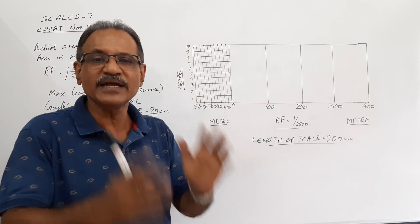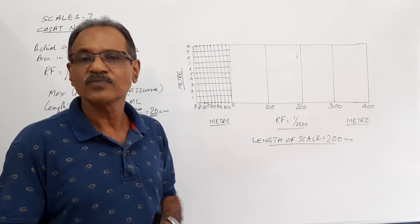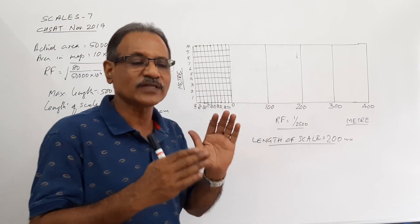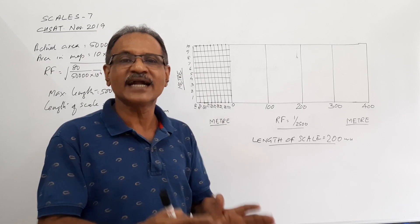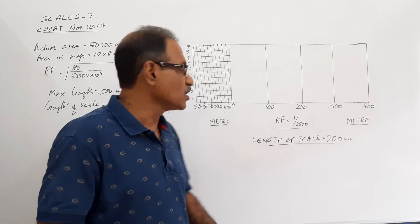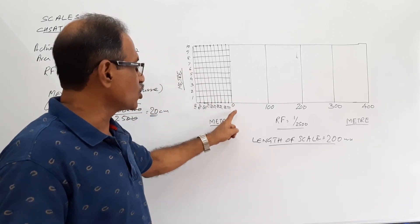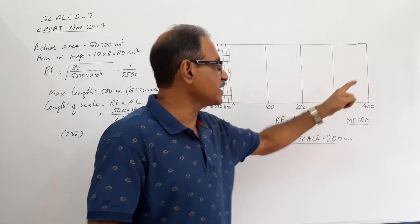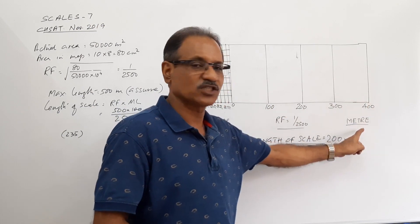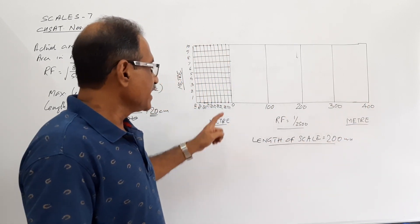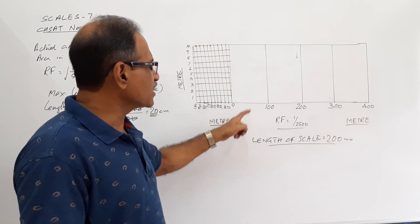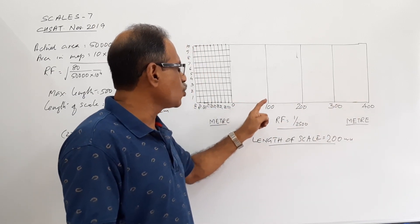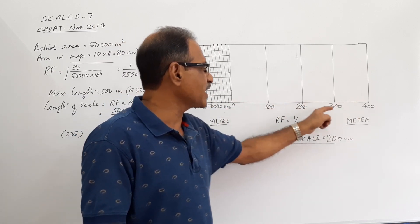I divide the 20 cm length into 5 equal parts so that each division represents 100 meters: 0, 100, 200, 300, 400 meters. Instead of writing 0, 100, 200, 300, 400, I can write 0, 1, 2, 3, 4.